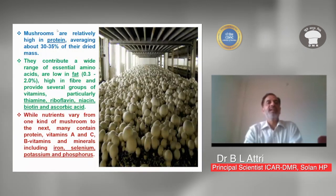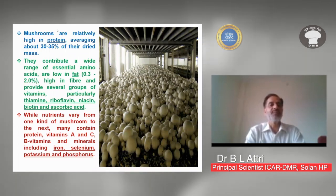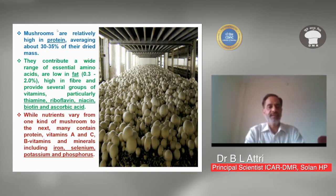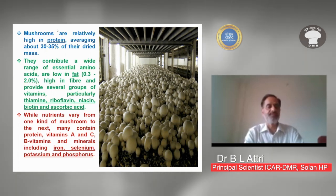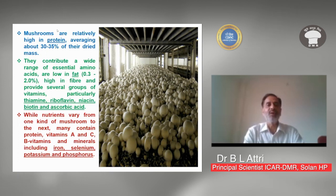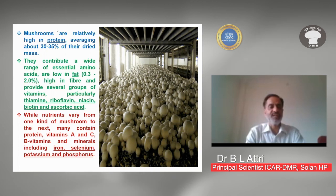Mushrooms are a rich source of protein. On a dry weight basis, they contain around 30 to 35% protein with a wide range of essential amino acids. On a fresh weight basis, protein varies from 4 to 12%, with high biological value — about 80 to 90% of the protein is absorbed by the body, which is superior to pulses. Fat content is very low at 0.3 to 2%, and they are high in fiber. They provide several B-group vitamins particularly thiamine, riboflavin, niacin, biotin, and ascorbic acid. Nutrients vary between mushroom species, including differences in protein, vitamins A, B, and C, and minerals such as iron, selenium, potassium, and phosphorus.